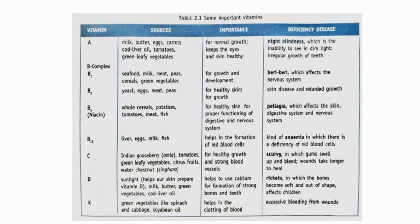Vitamin B3, also known as niacin — sources are whole cereals, potatoes, tomatoes, meat, and fish. It is important for healthy skin and for the proper functioning of both the digestive and nervous systems. The deficiency disease is pellagra, which affects the skin, digestive system, and nervous system.